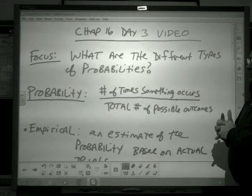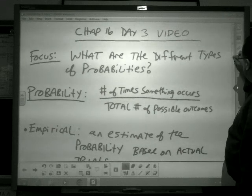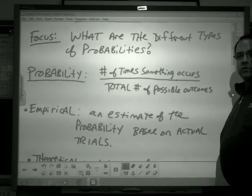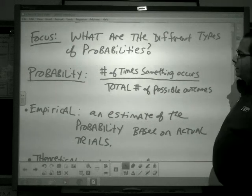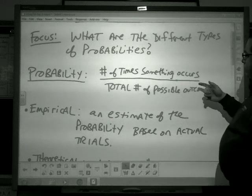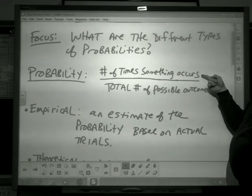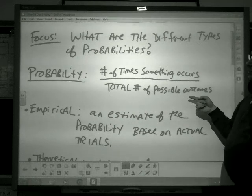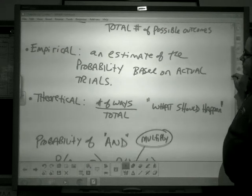What we're going to focus on today are the different types of probabilities. The first types you have done in the past. The third type comes from the activity that we did today in class. Probability in general, if you remember, is the number of times that something does occur divided by the number of possible outcomes that could happen.